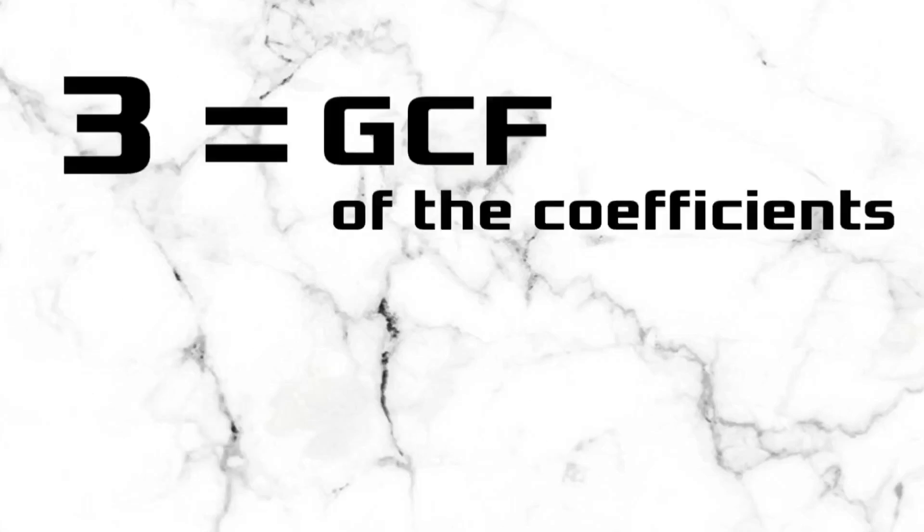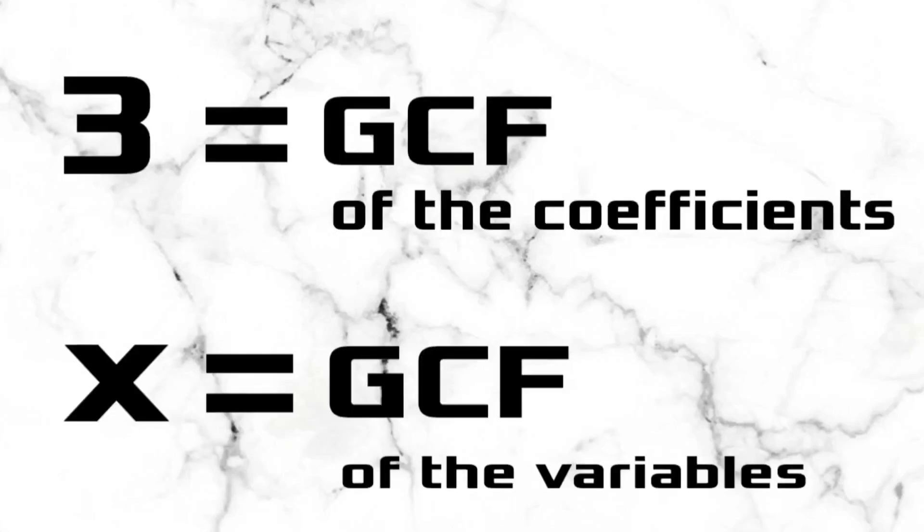To have our GCMF, simply find the product of the GCF of the numerical coefficient and variables as shown on the screen. Hence, 3x is the GCMF of 6x and 3x squared.